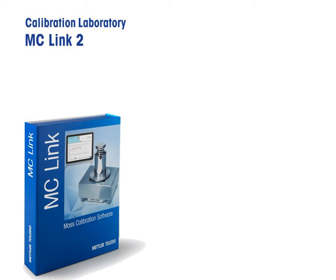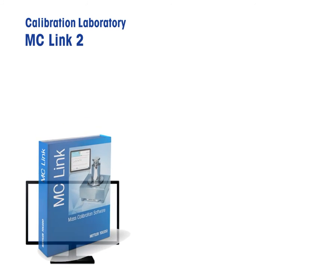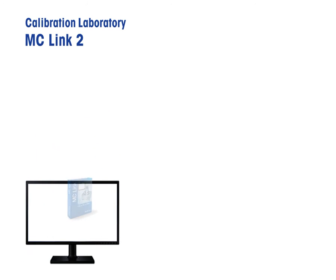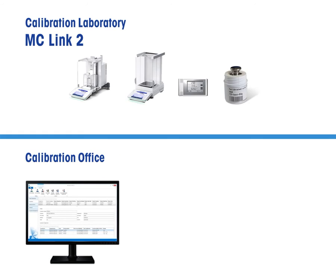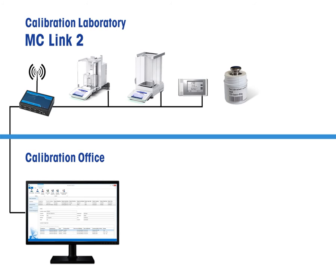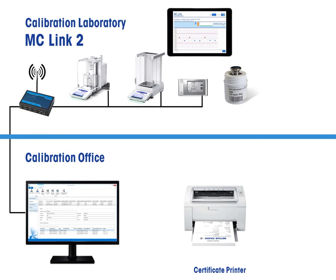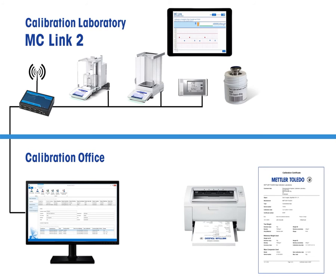With MCLink 2, the same fundamental principles are followed. The advantage of MCLink 2 is the interconnectivity of all process sensors and the fully automated instantaneous calculations. The tablet in the laboratory ensures the lowest temperature influence. The certificate is generated with a few clicks, and printed directly from the MCLink 2 system.